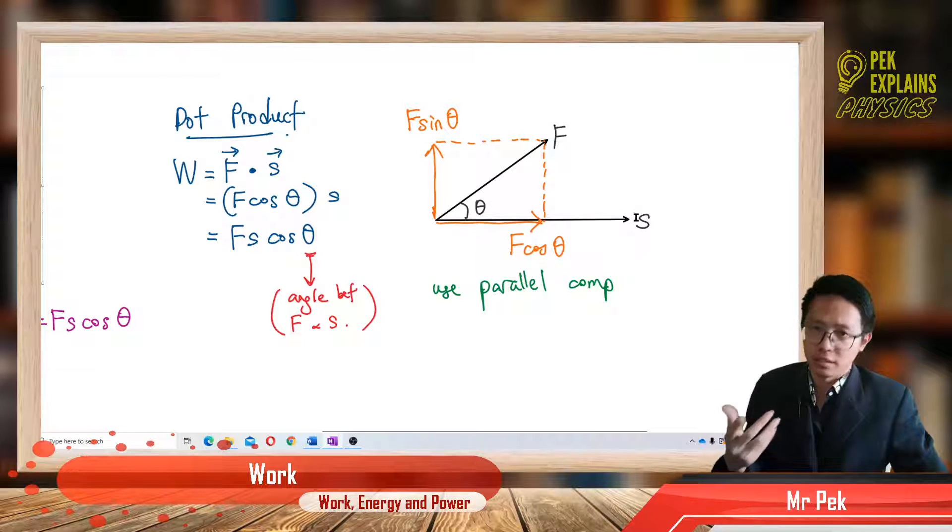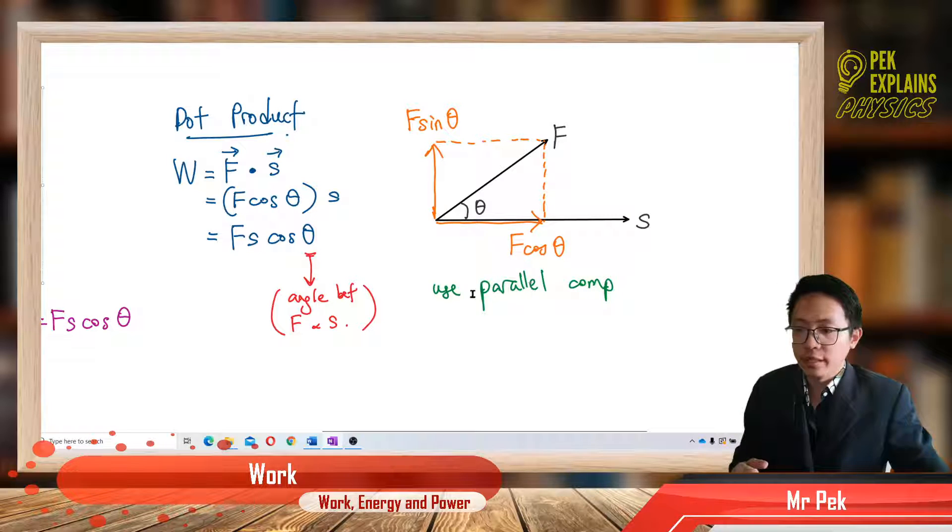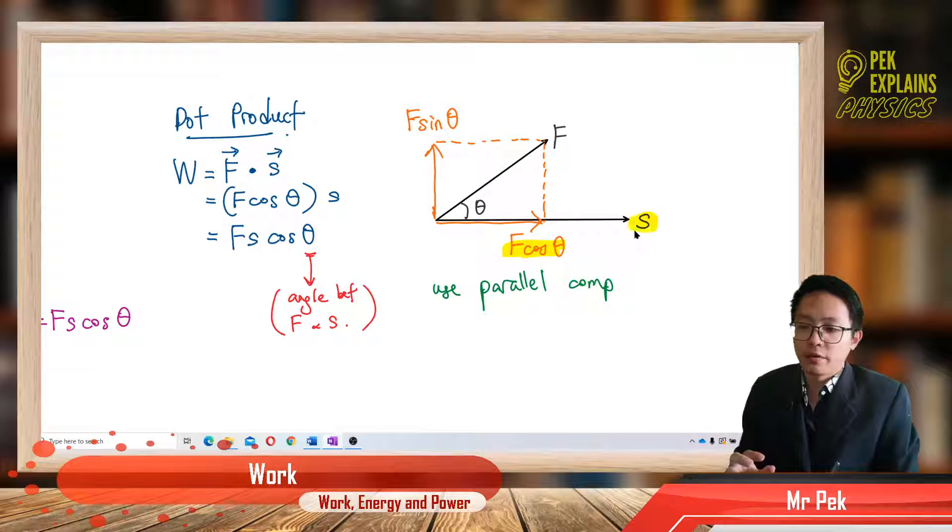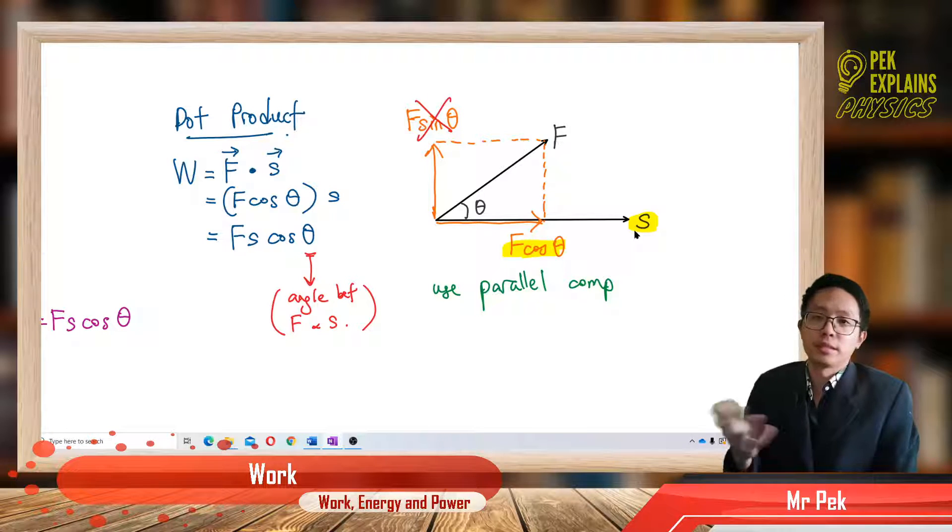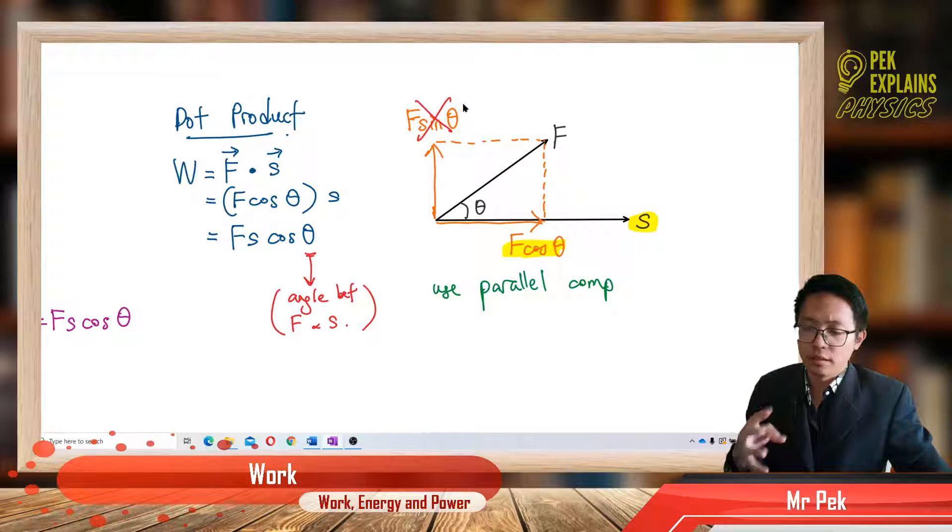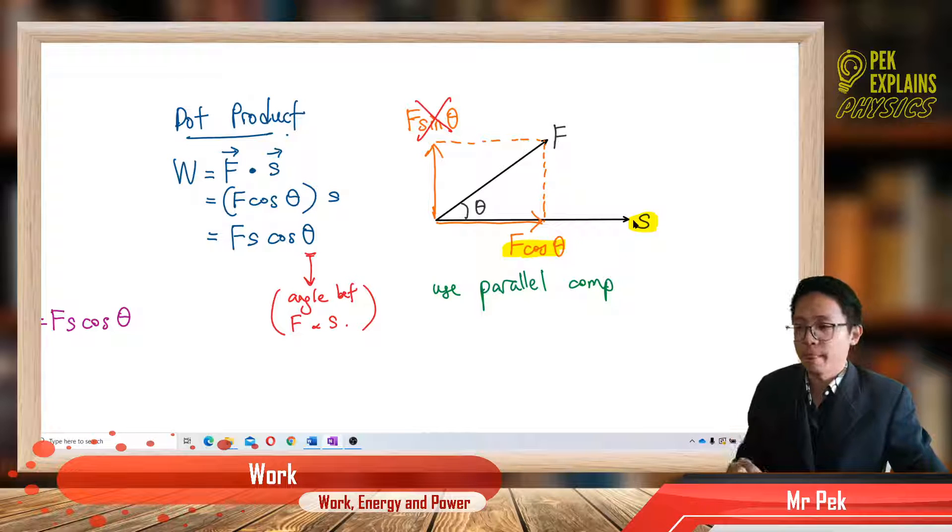F sin theta has no function at all. Cannot move the object along the displacement. That's why in dot product, we use only the parallel component to multiply. That means we use the F cos theta to multiply with the displacement. The perpendicular component we just ignore.